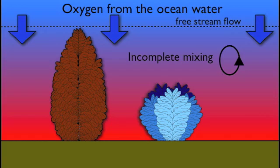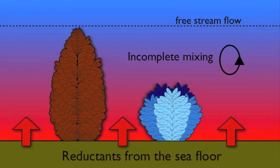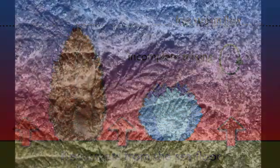This means that rangiomorphs couldn't be taking advantage of any gradients in the water column, like differences in oxygen between the sea floor and higher up, or differences in nutrients between the sea floor and higher up in the water column. So that's not the way that rangiomorphs could have been competing with bacteria for nutrition in the water.